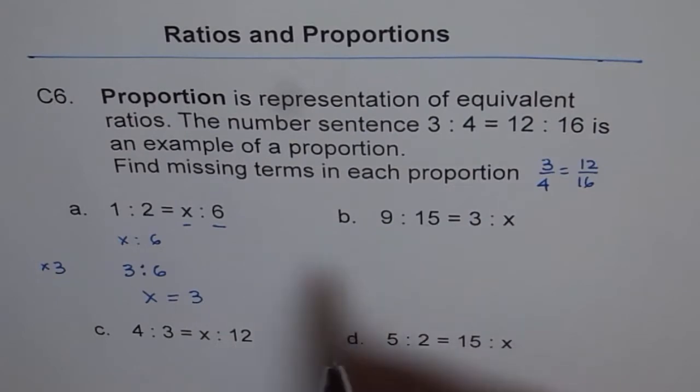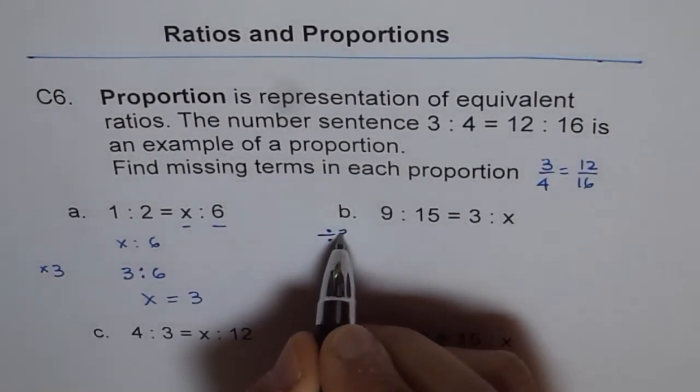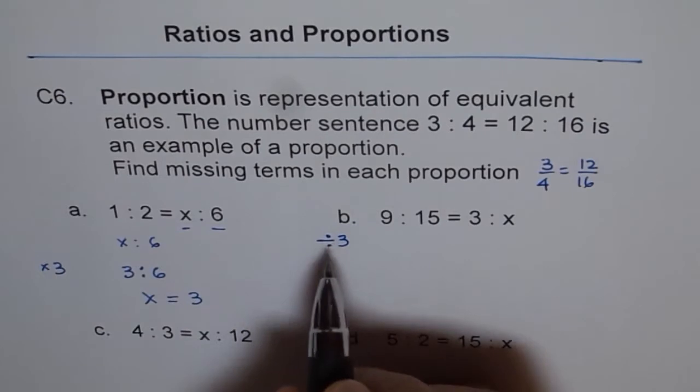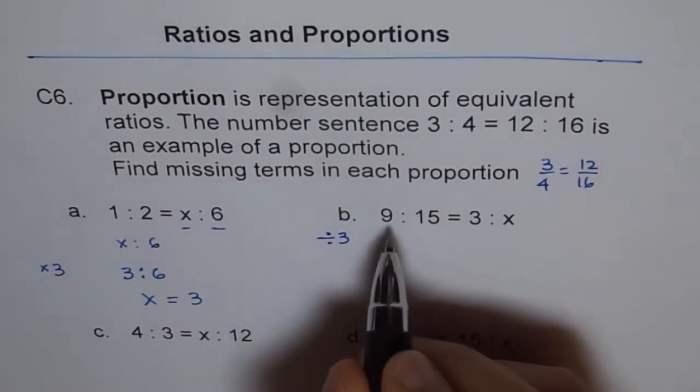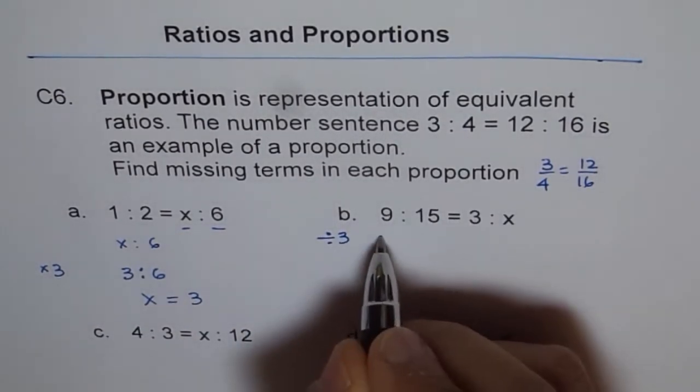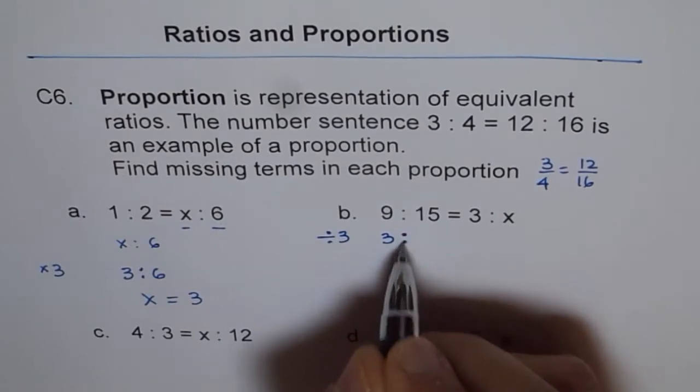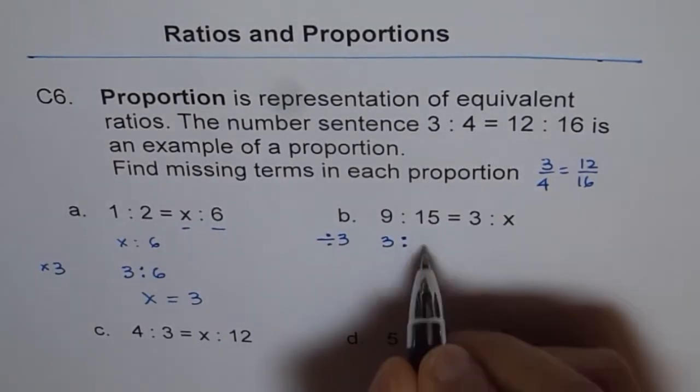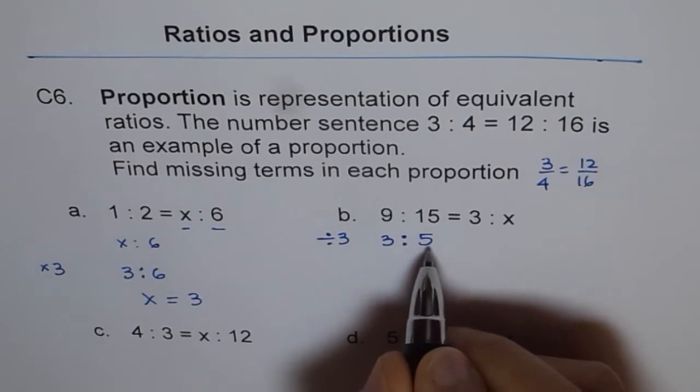To get 3 from 9, we need to divide by 3 each number. So that is what we are going to do. If I divide 9 by 3, what do I get? I get 3. And if I divide 15 by 3, I get 5. So I get 3 is to 5.